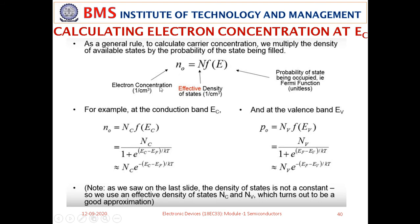The electron concentration at equilibrium is n₀ = NC × F(EC) = NC / (1 + e^((EC - EF)/kT)). Since the exponential term is very large, 1 can be neglected in the denominator, giving n₀ ≈ NC · e^(-(EC - EF)/kT). Similarly, the hole concentration is p₀ = NV × F(EV) = NV · e^(-(EF - EV)/kT), applying the same approximation.